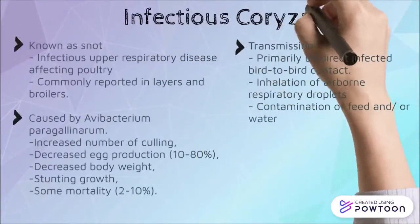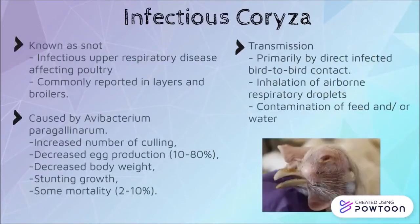Infectious coryza is an infectious upper respiratory disease that affects poultry. It is caused by Avibacterium paragallinarum and it can cause a decrease in egg production, body weight, and stunting of growth. It is transmitted primarily by direct infected bird-to-bird contact or through contaminated feed.